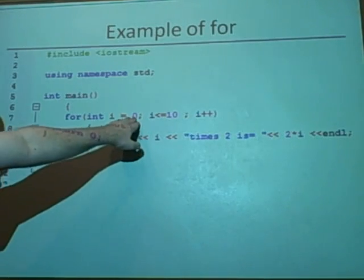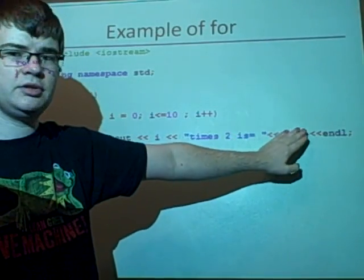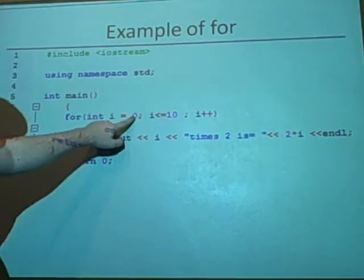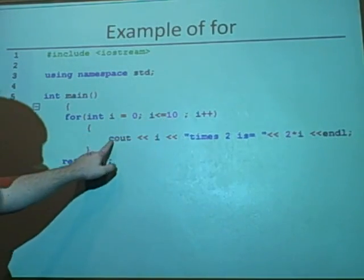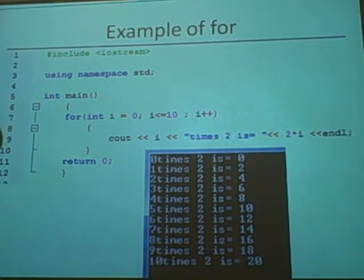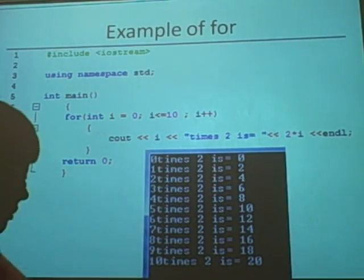So i is less than 10, it's 0. So 0 times 2 is going to be 0 here. Then we increase i by 1. So it goes i is 1 and it's less than 10, that's true. So we do this. And if we input it into the program, this is what you get. 0 times 2 is 0, 1 times 2 is 2 and so on.